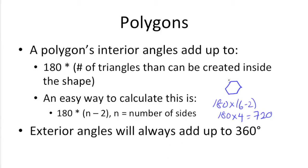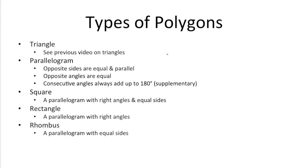The exterior angles of a polygon will always add up to 360. So there are various polygons you might encounter on the SAT or ACT. Triangles, which we've covered in a previous video.